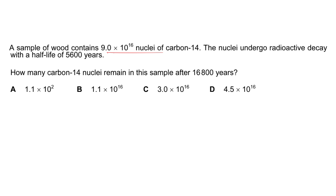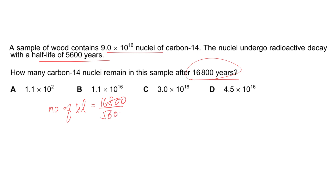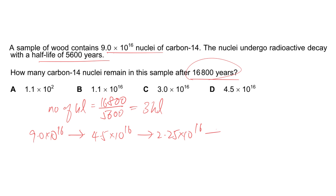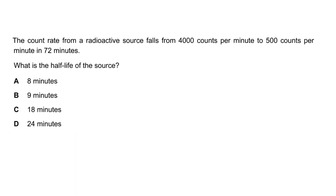In Question 8, a wood sample contains carbon-14 nuclei that decay with a half-life of 5,600 years. After 16,800 years, the number of half-lives is 16,800 ÷ 5,600 = 3. Starting from 9.0 × 10¹⁶ nuclei: after one half-life → 4.5 × 10¹⁶; second → 2.25 × 10¹⁶; third → 1.125 × 10¹⁶, which rounds to 1.1 × 10¹⁶. The answer is B.